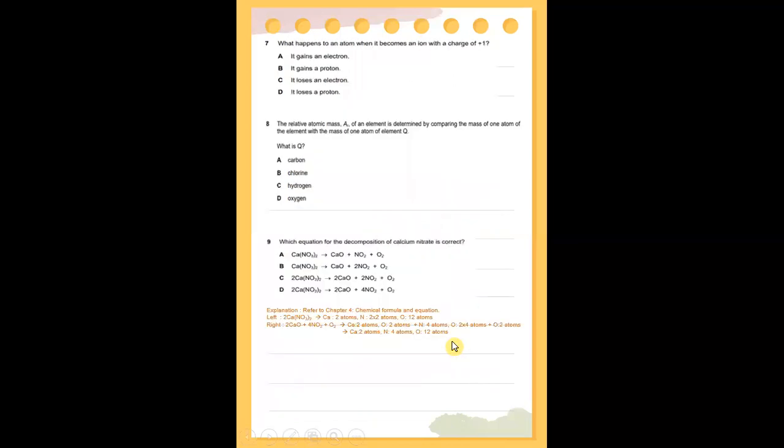Number seven: what happens to an atom when it becomes an ion with a charge of +1? Referring to chapter 3 as we already learned — an example is the sodium atom. After losing one electron, a positive ion is formed. So, it means that it loses an electron and a positive ion is formed.